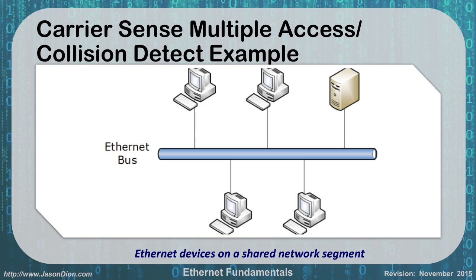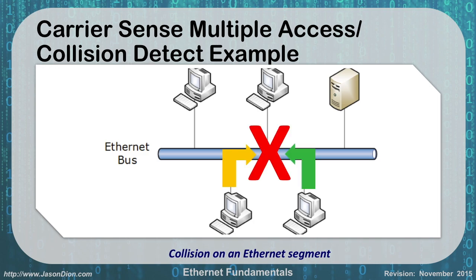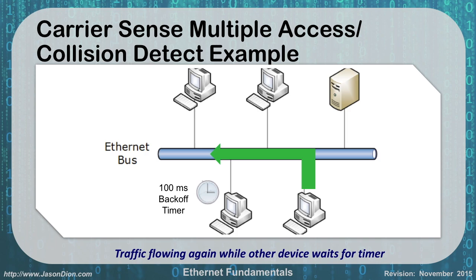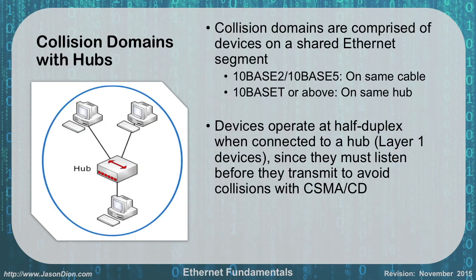With CSMA/CD, all Ethernet devices share a bus — or equally, a star network on a hub. If two devices talk at the same time, there's a collision. They each choose a random back-off time. Say the device on the left chose 150 milliseconds and the one on the right chose 50. After 50 milliseconds, the right device transmits again — no problem. The left device waits its remaining 100 milliseconds, then tries as well. If too many devices are present, there are more collisions, and so much back-off time accumulates that nothing gets done. That's the problem with hubs.